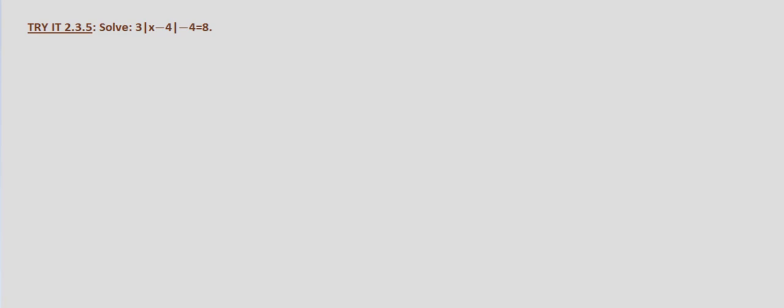We isolate the absolute value expression on one side of the equation. We write the equivalent equations, setting it equal to the negative and equal to the positive. Then solve each equation and check the solution. So with this problem we're given 3 times the absolute value of x minus 4, minus 4, equals 8.